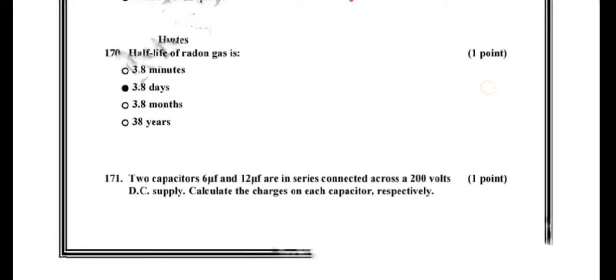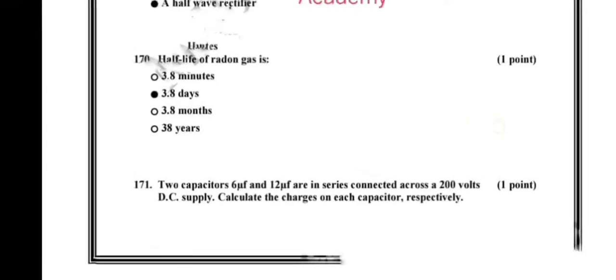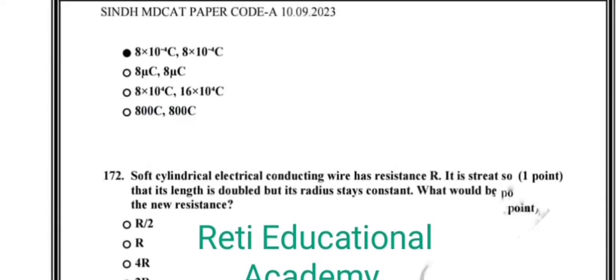Question number 170: the half-life of radon gas is 3.8 days. Question number 171: two capacitors, 6 µF and 12 µF, are connected in series across a 200 volts DC supply; calculate the charge on each capacitor respectively — the correct option is A.